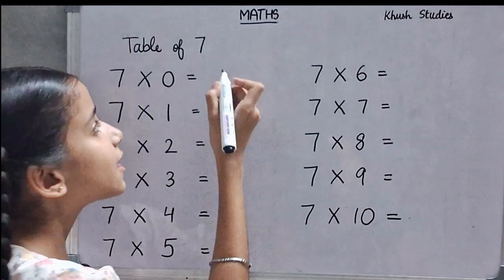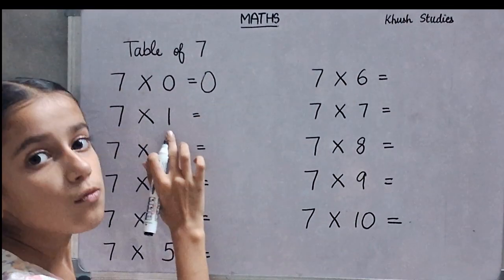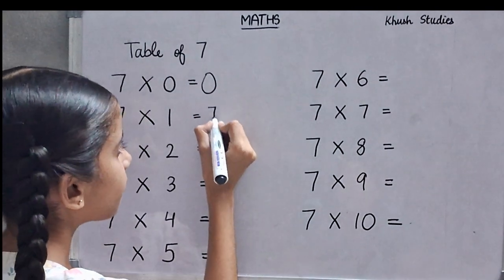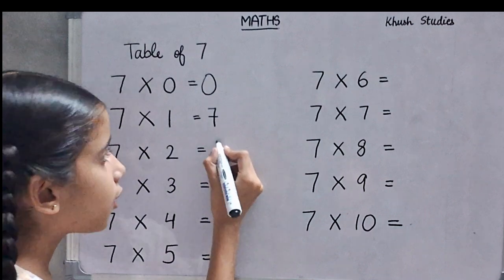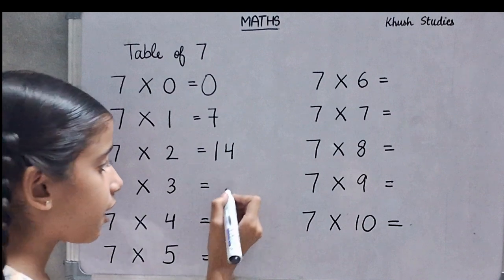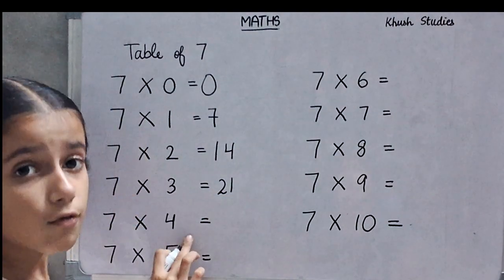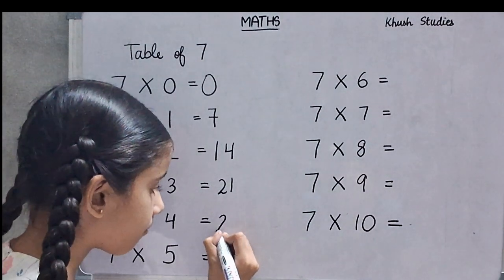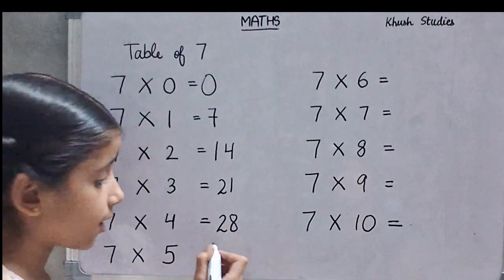7 zeros are 0. 7 ones are 7. 7 twos are 14. 7 threes are 21. 7 fours are 28. 7 fives are 35.